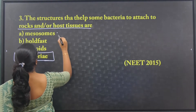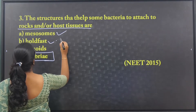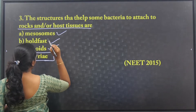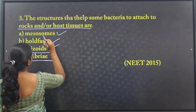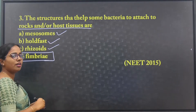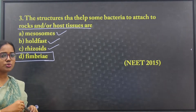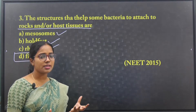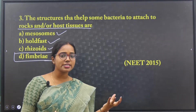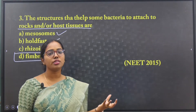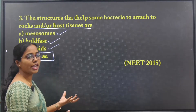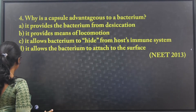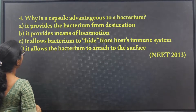Hold fast rhizoids are found in algae. Mesosome, as we just learned, is the respiratory substance found in the prokaryotic cell.